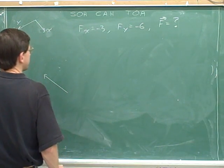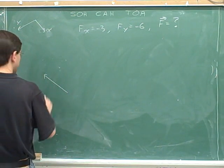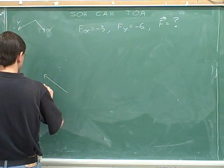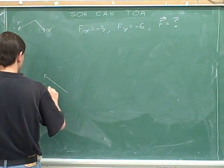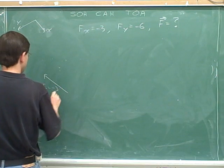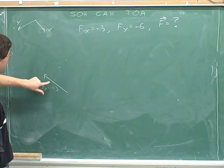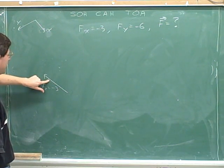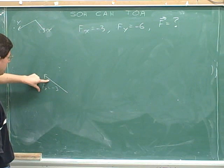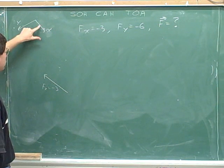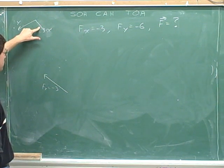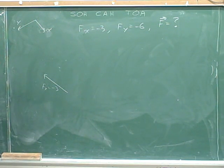Looks like it's pointing like this. You can see this is the negative x direction. Up and to the left is the negative x direction, since down and to the right is the positive x direction. Always we have to be careful about directions and signs.